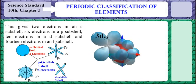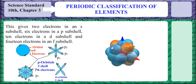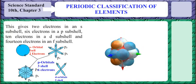6 electrons in a P subshell, 10 electrons in a D subshell, and 14 electrons in an F subshell.